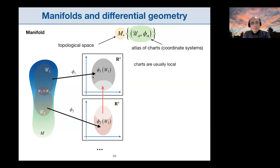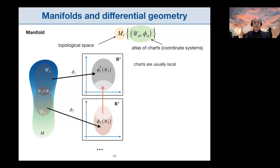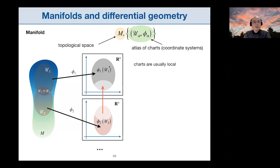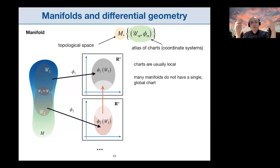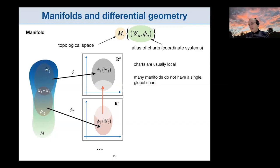For most manifolds, due to topological reasons, you cannot define a global chart. Charts are local — some subset U1 is covered by one chart, U2 by another, and on the overlap there is a coordinate transformation. It may also happen that a globally-valid chart exists but is not physically the most useful one. In general relativity we often adjust our coordinate system to a particular physical problem, and the most useful one may fail to be global.